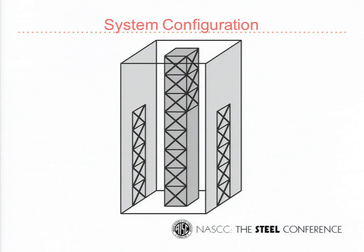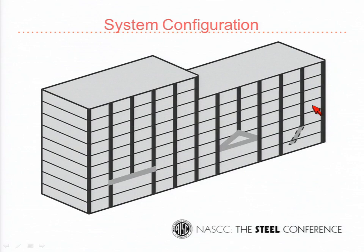On system configuration — what to avoid: these issues happen especially in multi-use facilities where you might be transferring loads from one program to another. We try to avoid having a brace frame come down and then get transferred to the outside of the building — it's an irregularity, a big diaphragm transfer issue, and a lot of money to make that gymnastics work. It also affects building behavior in seismic, which is important to get right.